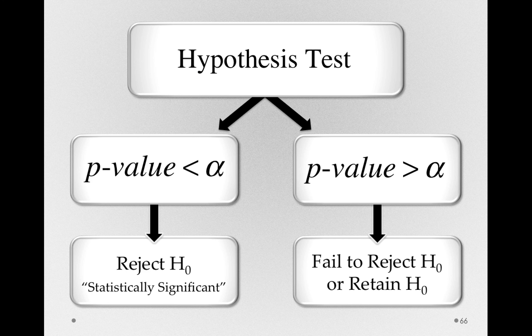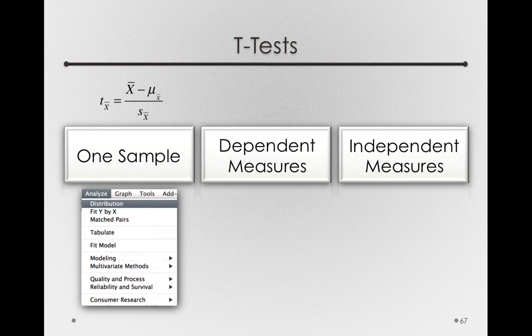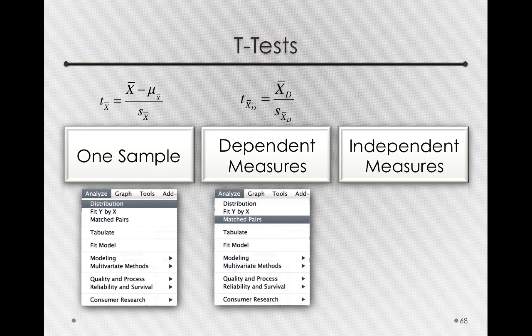Either way, you'll make the decision the same way. Performing your hypothesis test always yields a p-value. And if your p-value is less than alpha, that's when you get to reject the null hypothesis. So going forward, for our dependent measures t-test, I would recommend using Analyze matched pairs.